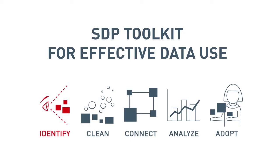The SDP Toolkit contains five steps that guide an education analyst in collecting and analyzing their agency's data. It moves from identifying the data, collecting that data, cleaning it and coding it, making sure that the variables are accurate, merging disparate datasets, analyzing that data, and then finally adopting best practices for data use.